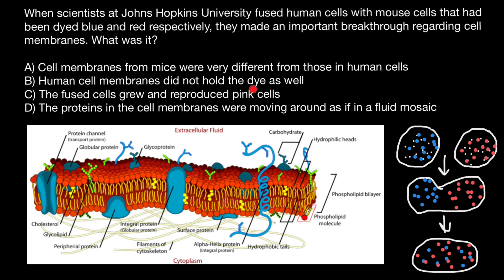Variant B: human cell membranes did not hold the dye as well. Variant C: the fused cells grow and reproduce pink cells. Actually, such a cell can grow, and interestingly, such cells are going to lose most of the human chromosomes, and mouse chromosomes would prevail in the hybrid cell. But they are not going to produce new pigment, of course. So this is also a wrong statement.